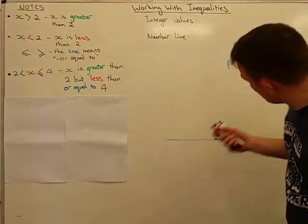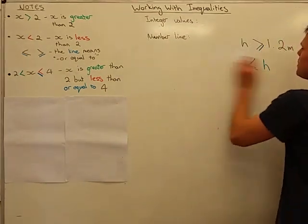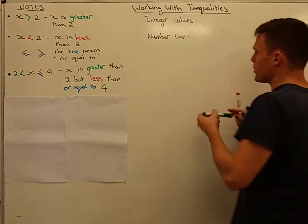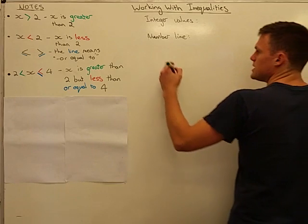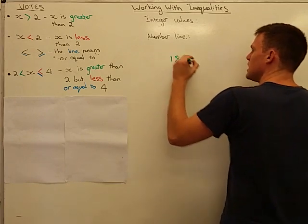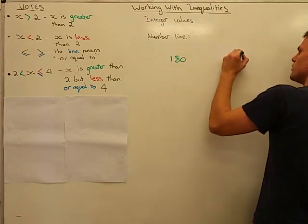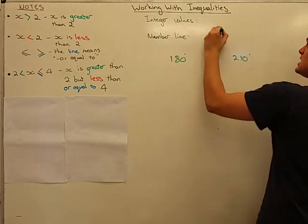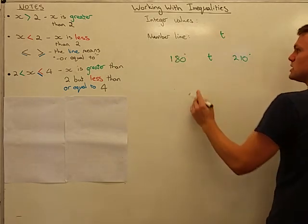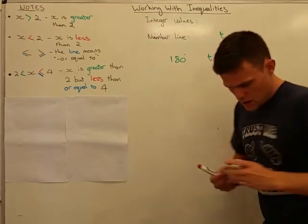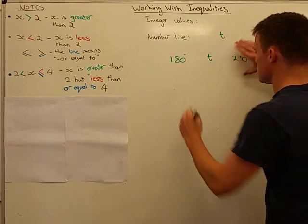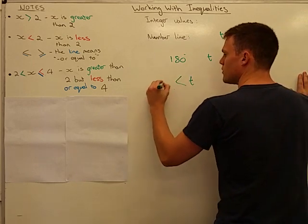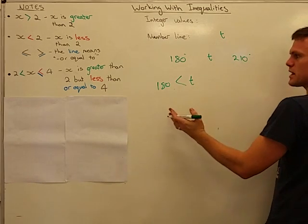You can combine inequalities. So you can say that the temperature that I'm cooking at, it needs to be between 180 and 210 degrees. So my temperature, let's say T is temperature, so T can be bigger than 180, so I can say that T is bigger than 180. But I then also need to know that T can also be less than 210.